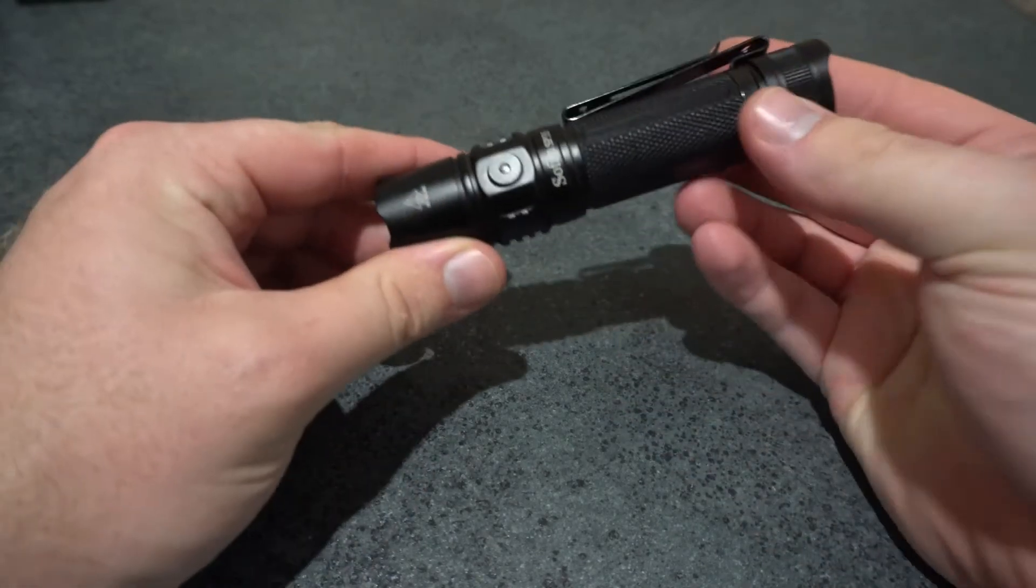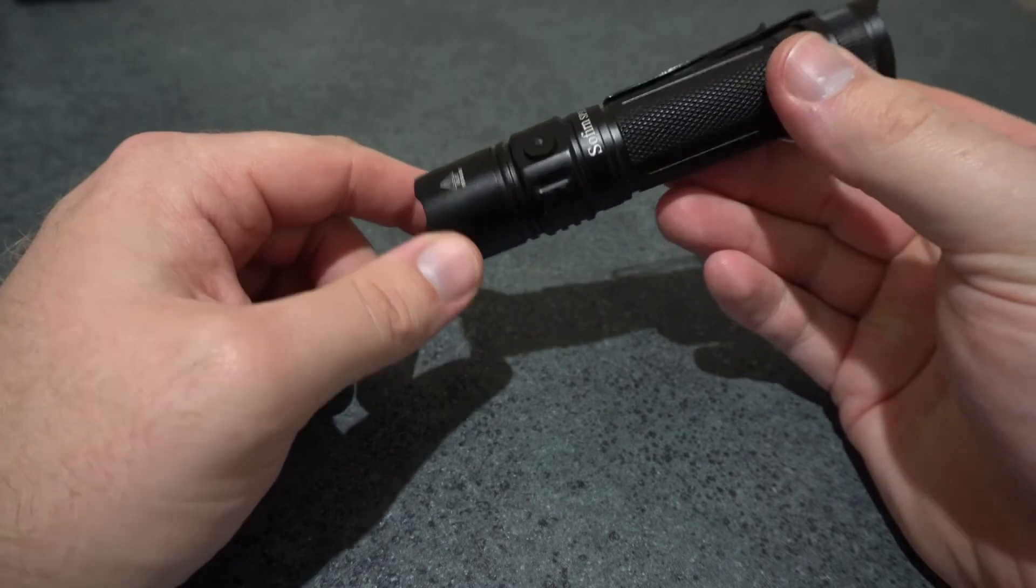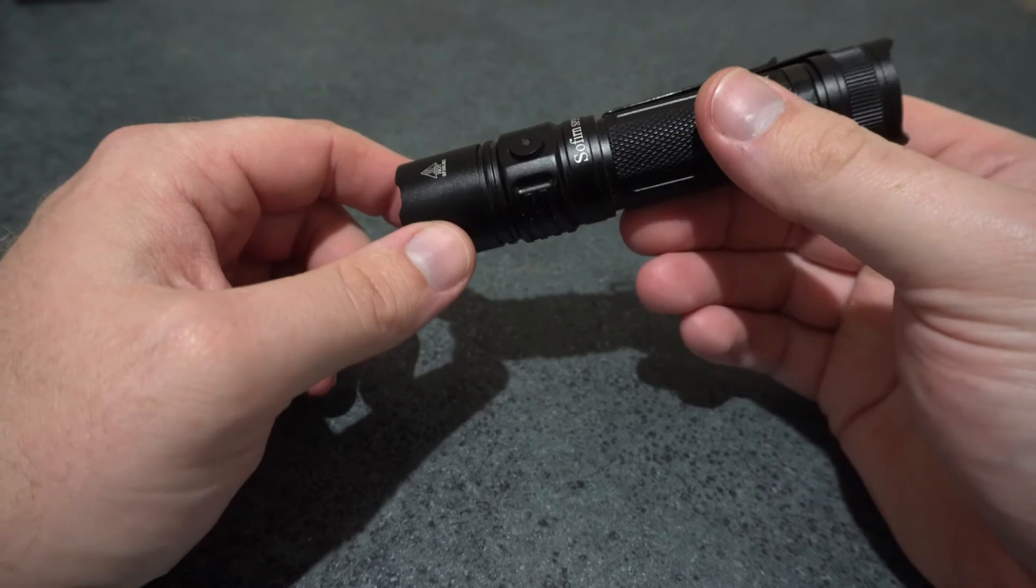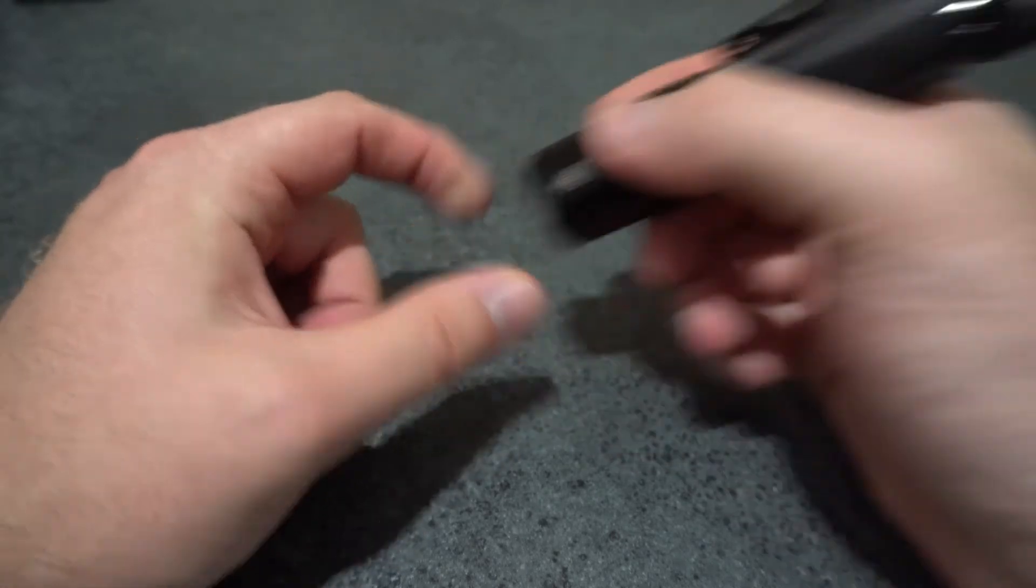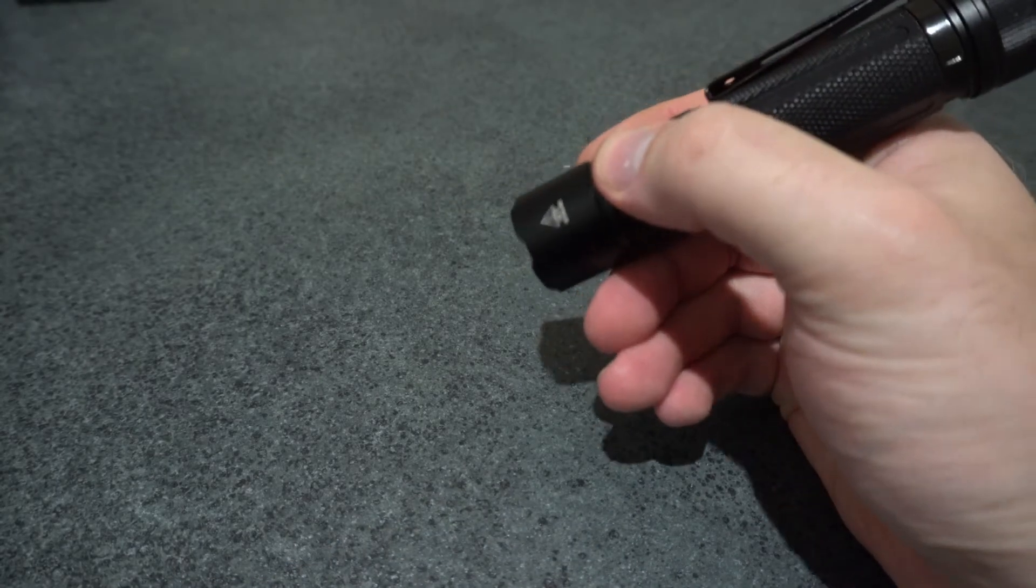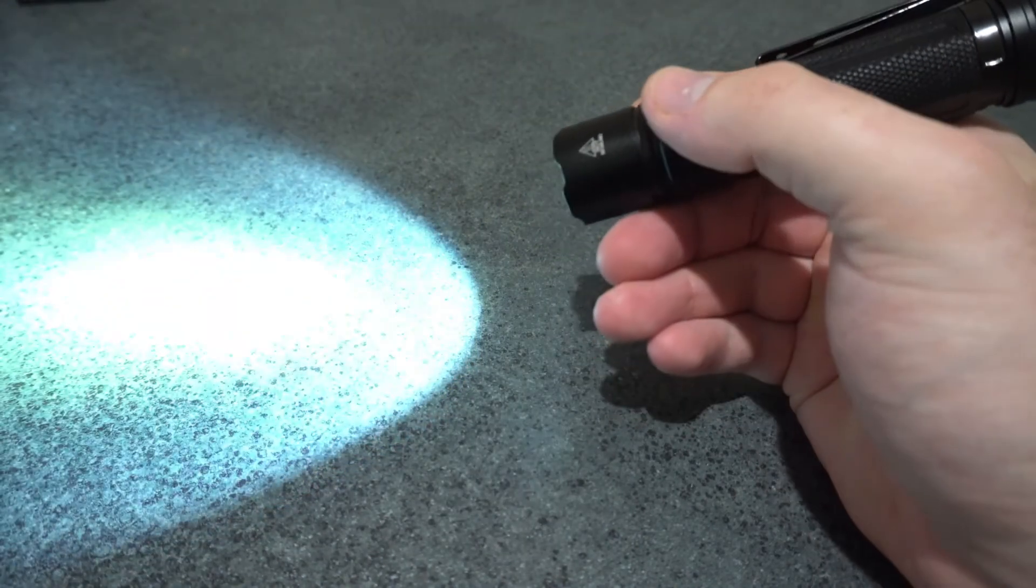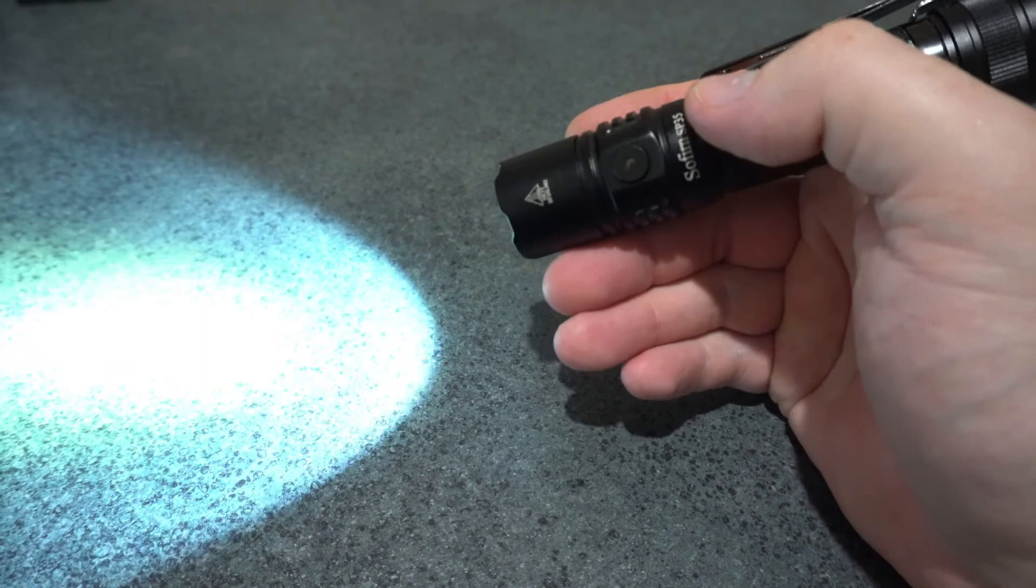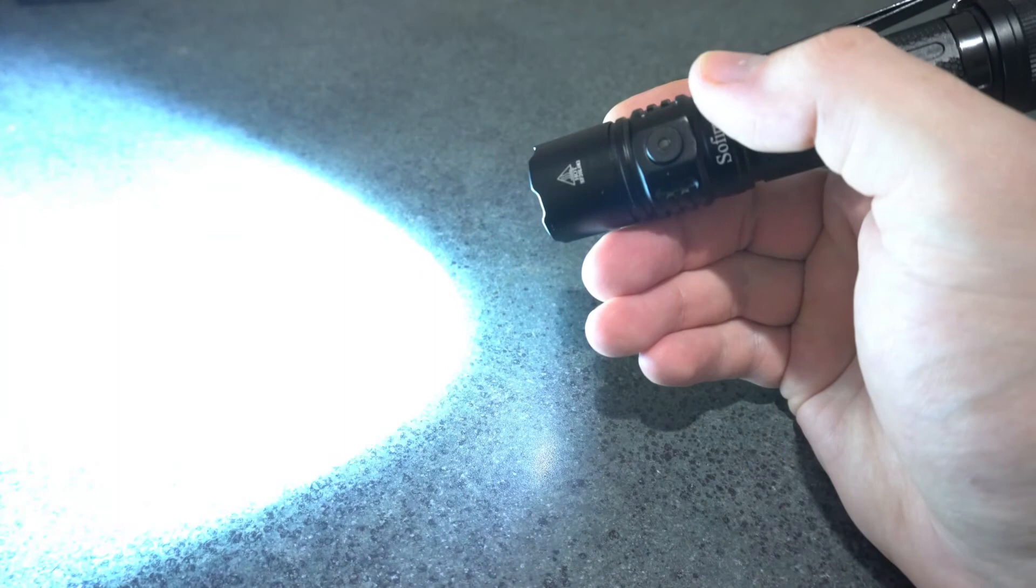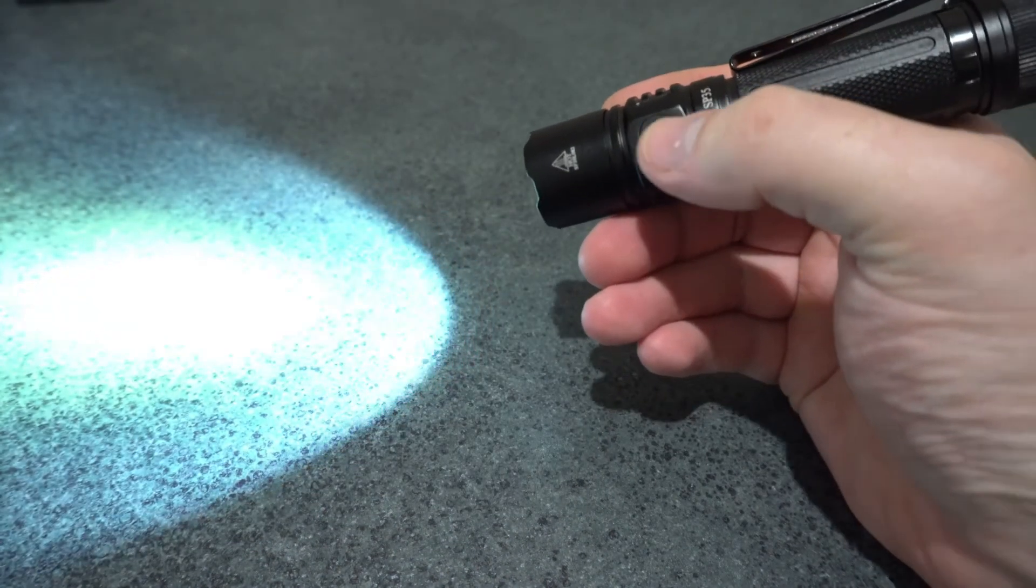I'm just going to go over the UI. There are two mode groups. The default is stepped modes, and group two is called ramping. So it is single click on, single click off. While it's on you would hold down the switch and it will increase the brightness. It will cycle through eco, low, medium, high. To get to turbo is a double click. Single click to get back down to your previous level.